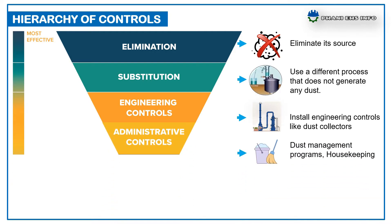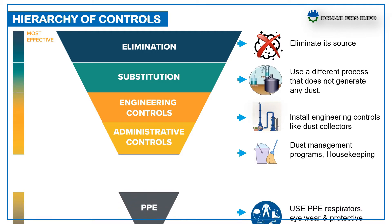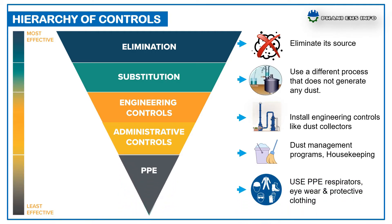Then apply administrative controls — change your work practices and policies, and provide awareness tools and trainings to limit the risk of combustible dust. Some of the administrative controls are developing dust management programs, effective manual cleanup, and housekeeping programs. When it comes to personal protective equipment, it is not an effective control measure for combustible dust explosions. Use proper respirators, eyewear, and protective clothing while working in dust atmospheres.